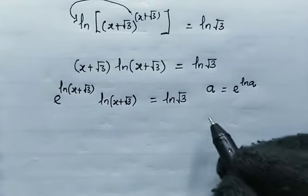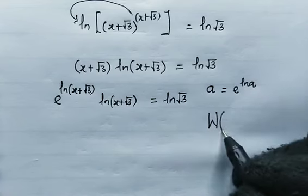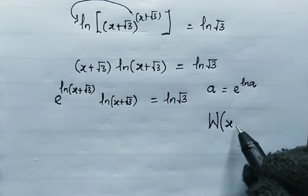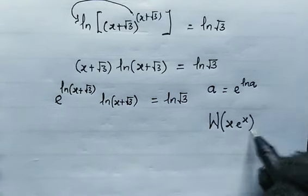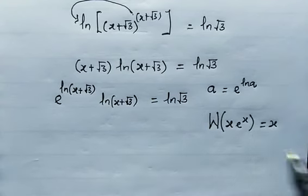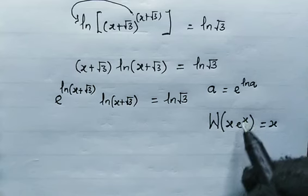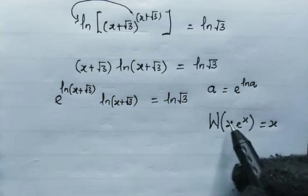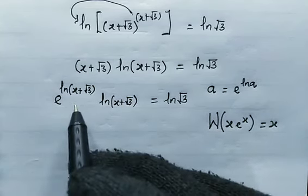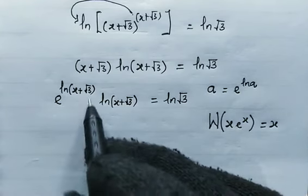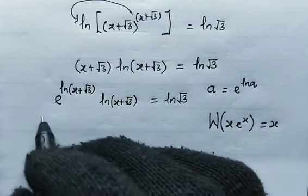From here, we're going to make use of the Lambert W function. Recall that the Lambert W function of x times e to the power of x equals x. Since the power of e here is exactly equal to the coefficient, and from here, we have the same argument here, right? So now...